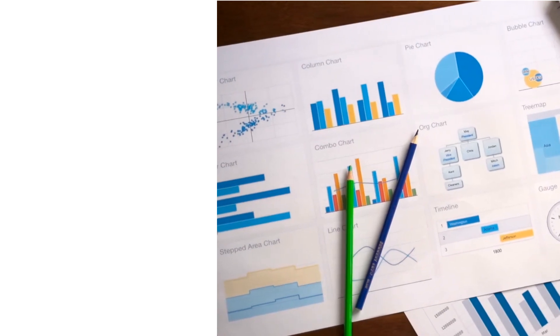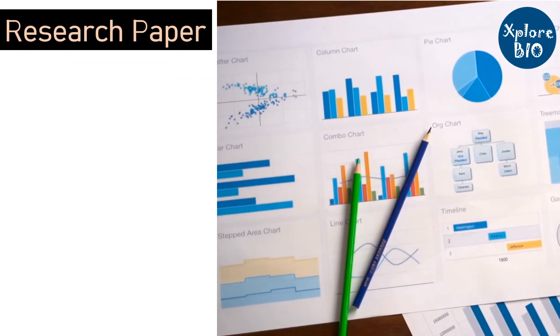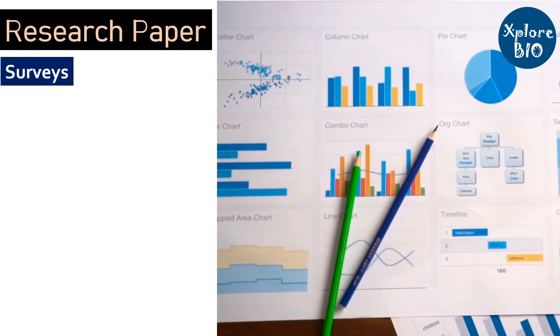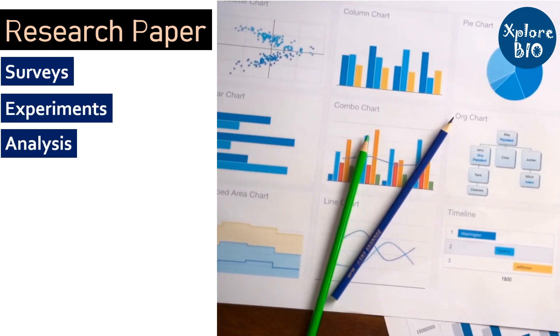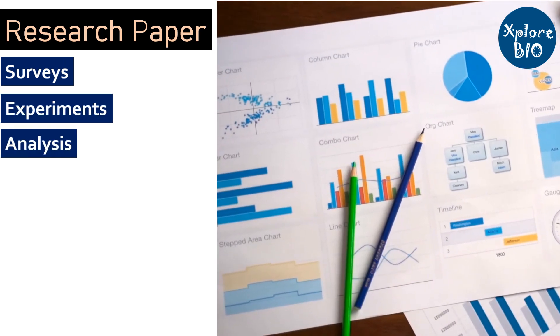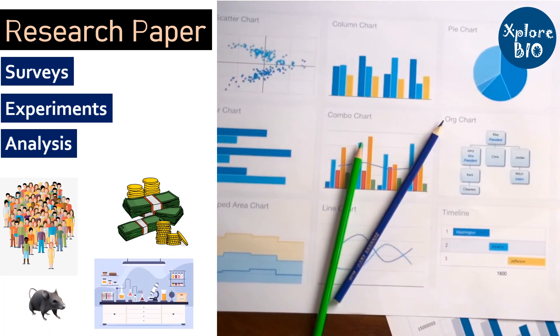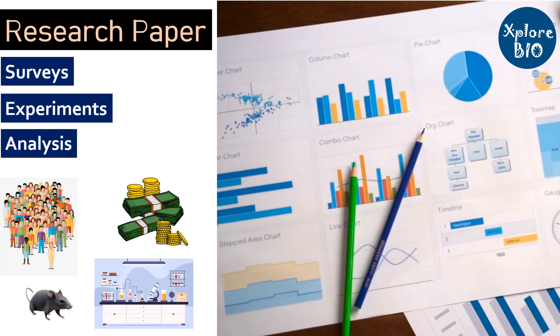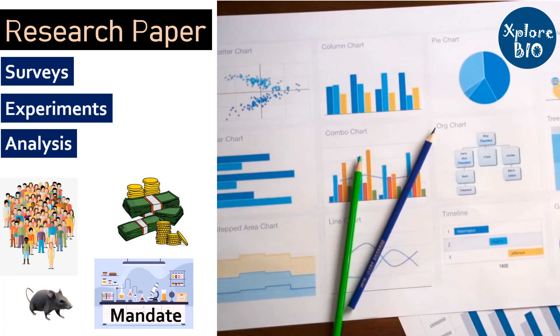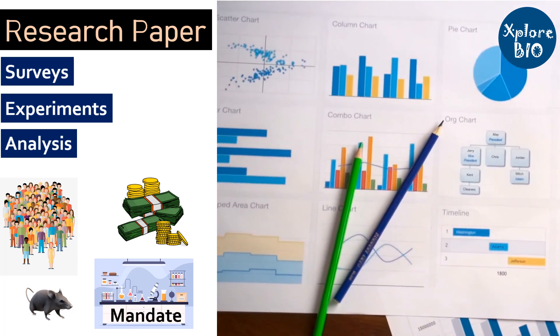A research paper is a form of original research you do. It involves surveys or experimentation and their analysis. You need various kinds of resources such as people, funding, laboratory, test organism to conduct such studies. Also, most laboratories have their own mandate out of which they usually do not prefer to work.